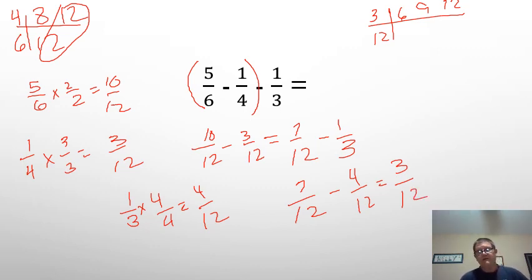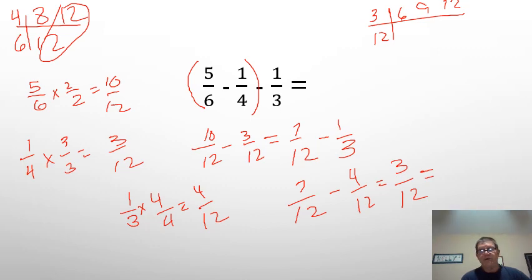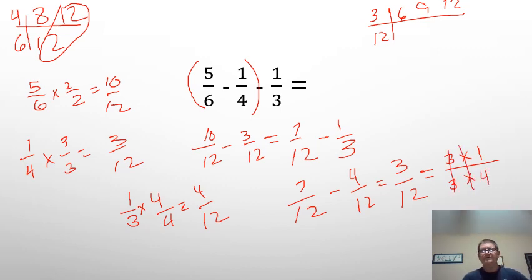Now, 3/12 is a good answer. But let's say it's not on my multiple choice — it may not be in lowest form. Are they both divisible by 2? Well, no — 3 is not divisible by 2. Are they both divisible by 3? Well, 3 is divisible by 3, and 12 is divisible by 3 also. So I can go 3 times 1 is 3, and 3 times 4 is 12 — take out the common factors. And I can see now that 3/12 is also equal to 1/4.